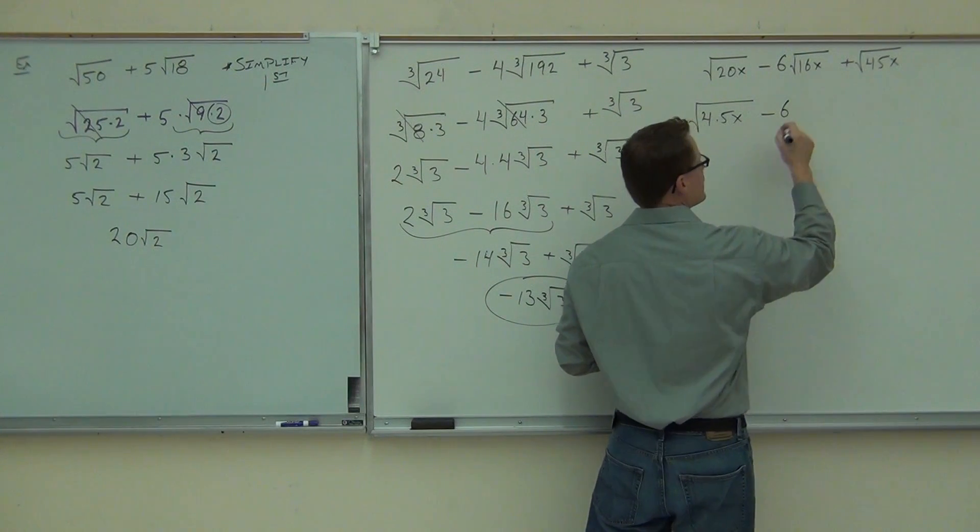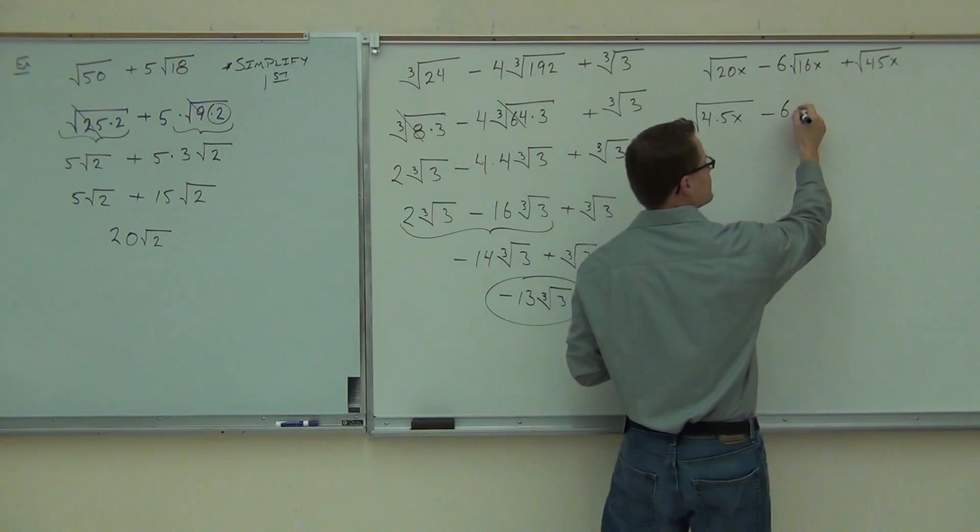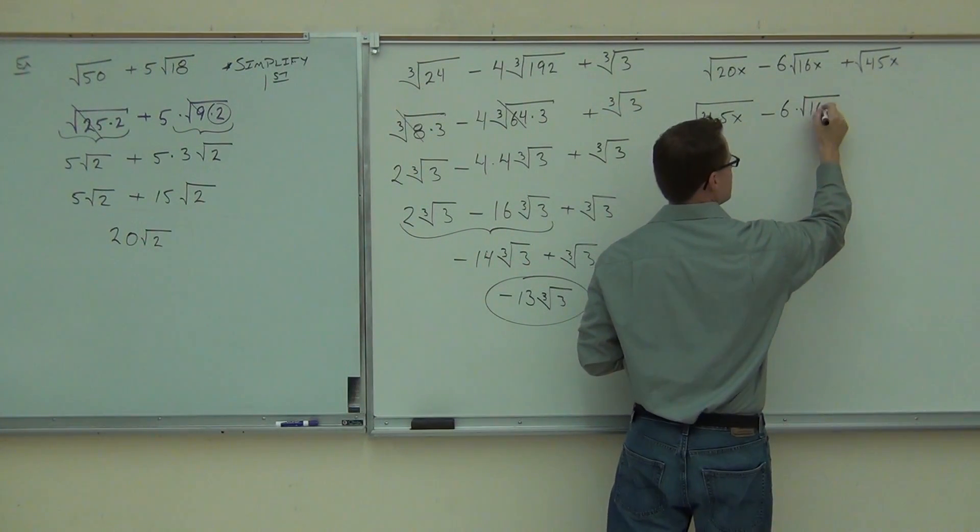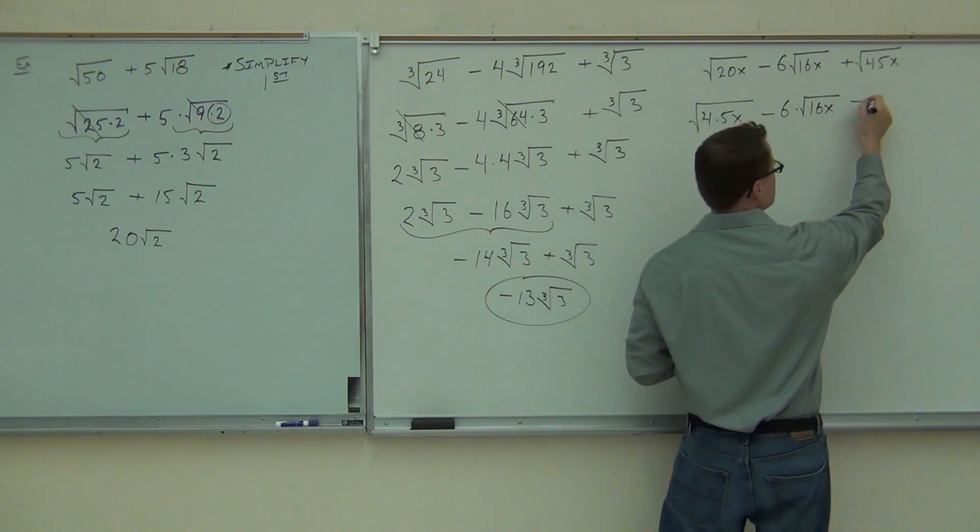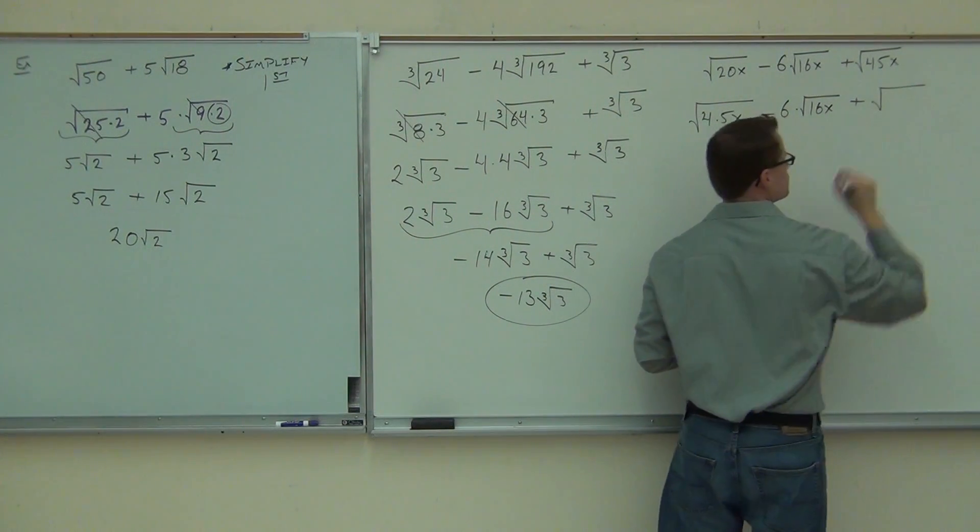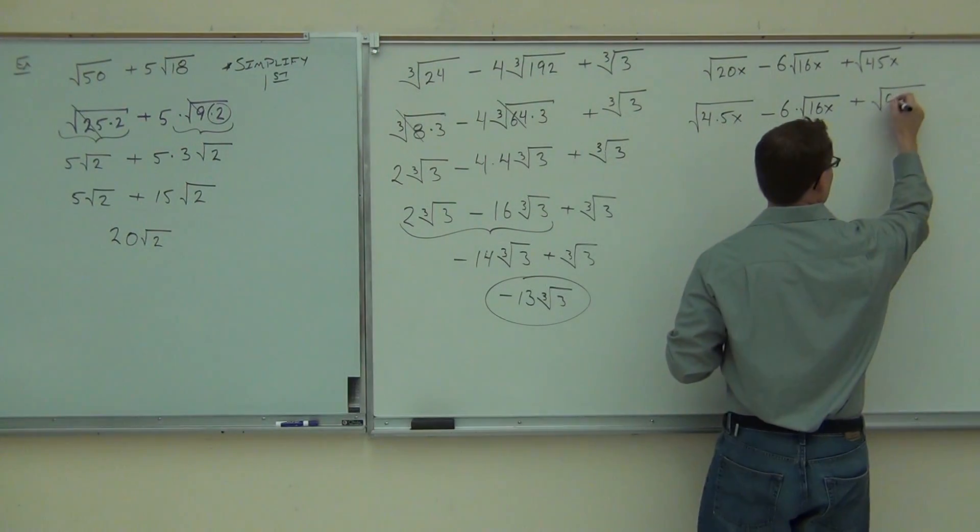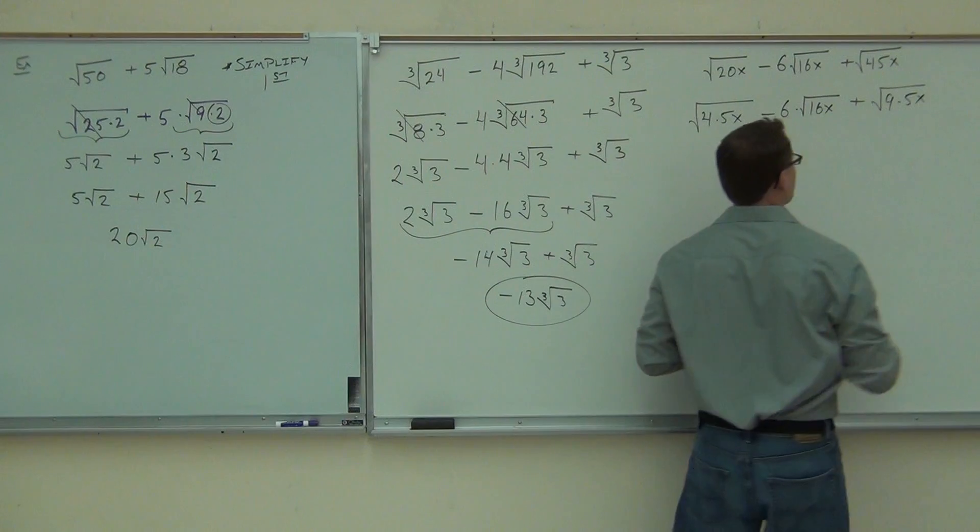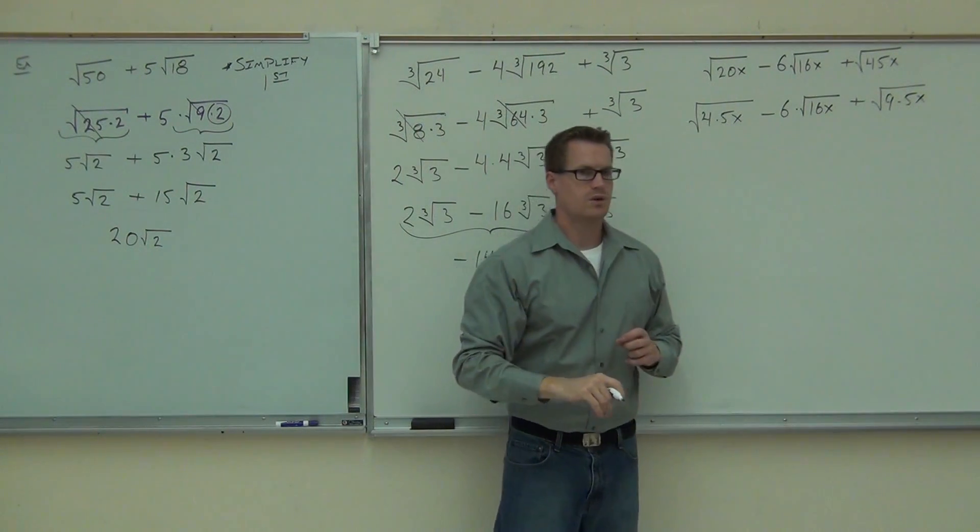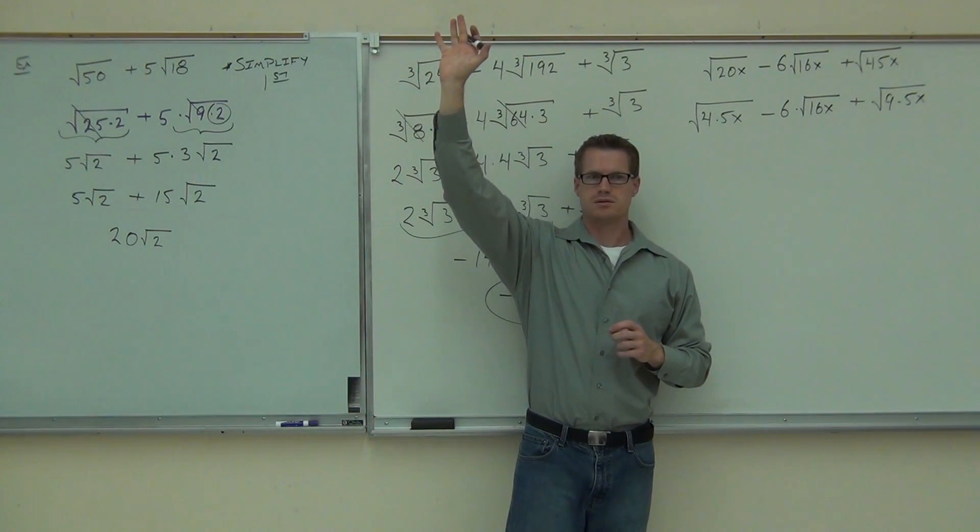I'm looking for squares. Minus 6 times the 16. That's already a perfect square. I'm going to leave that to the next step. 16x is great. Plus, how about the 45? What goes into 45? 9 and 5. 9 and 5. Great. 9 times 5x. You don't have to move me so far on this. Let's simplify.